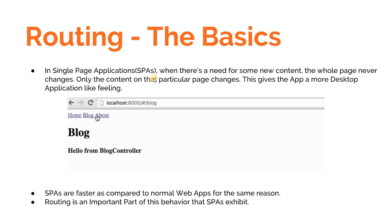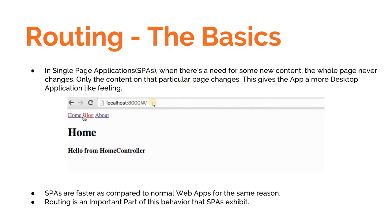Whenever Angular is asked to load a new view onto the screen, it does not send out a new request to the server. Instead, there is a configuration provided to Angular — basically a mapping of the route that is reached and the component that Angular has to load when that particular route is reached.